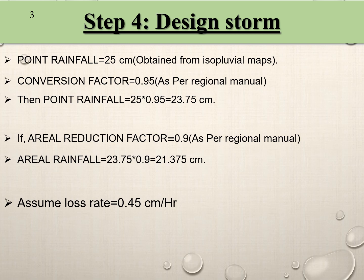As per the regional manual, an aerial reduction factor of 0.9 is taken. Multiplying this with the point rainfall gives an areal rainfall equal to 21.375 centimeters. We then assume a loss rate of 0.45 centimeters per hour.